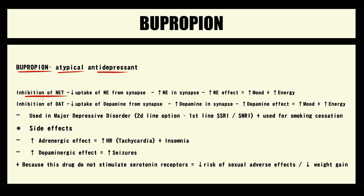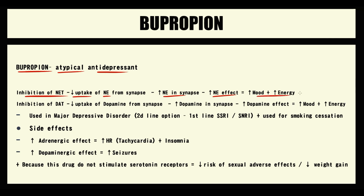The higher the stimulation of adrenergic receptors, the better the mood becomes and the more energy increases. So bupropion inhibits the function of the norepinephrine transporter, causing decreased reuptake of norepinephrine from the synapse. The amount of norepinephrine molecules in the synapse increases, the higher the adrenergic effect, and thereby the better the mood becomes and the more energy increases.